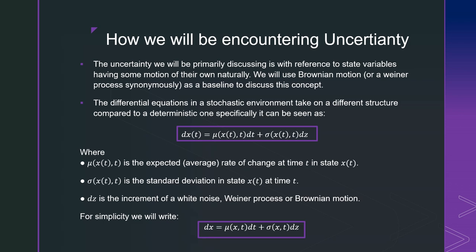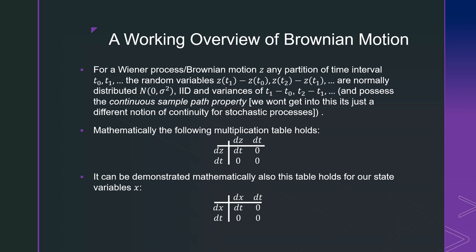So for a working overview of Brownian motion on one slide, which is what I do here, is a little bit hard to not get technical. So we'll work through it slowly. For a Wiener process or Brownian motion z, any partition of a time interval t0, t1 that goes on forever, that means we have well-defined points in time and random variables z(t1) minus z(t0) that goes on forever or maybe a finite amount of time.